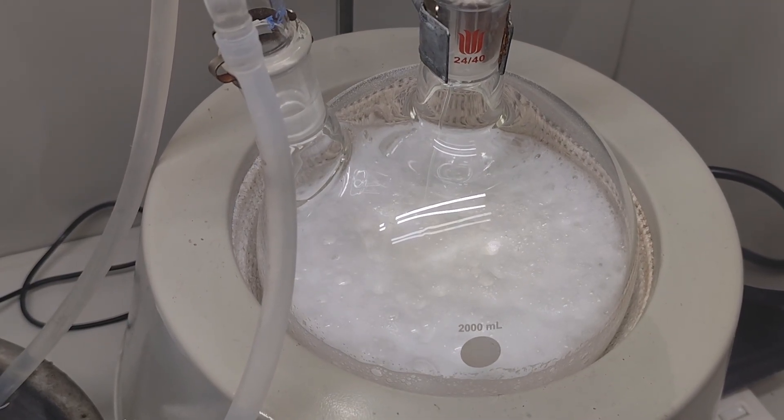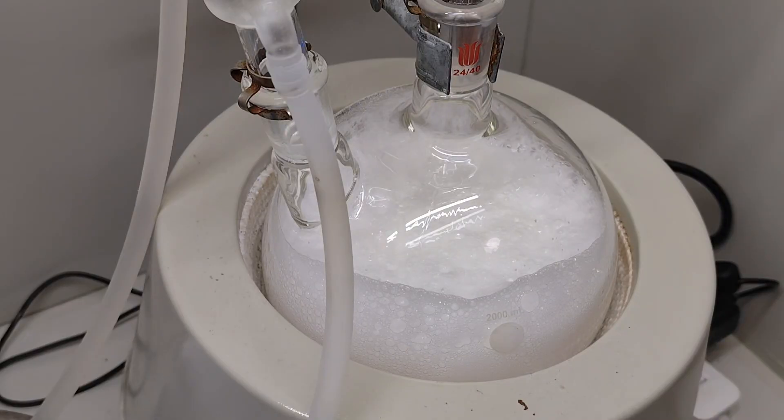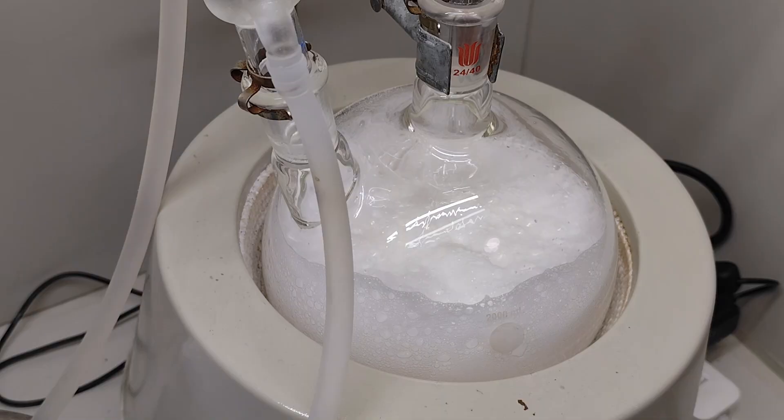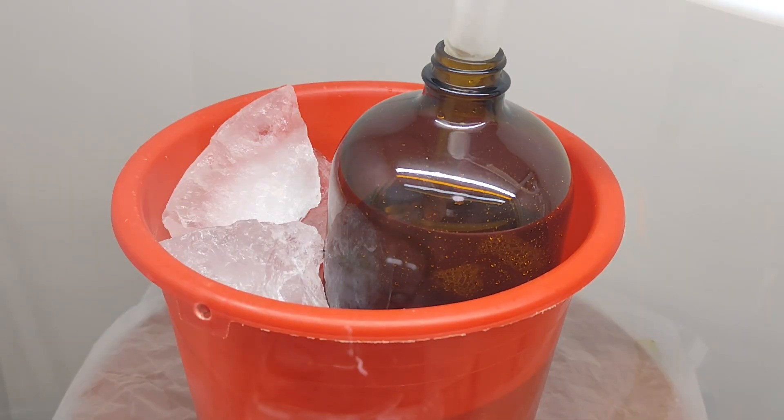Now, I turn on the electric heater to make the second step of the reaction occur. As you can see here, the bubbles in the flask appear again, meaning the second step is ongoing. However, a few minutes later, the bubbles appear again in the receiving bottle. This means the acid is about 40% and could no longer absorb the hydrogen chloride.